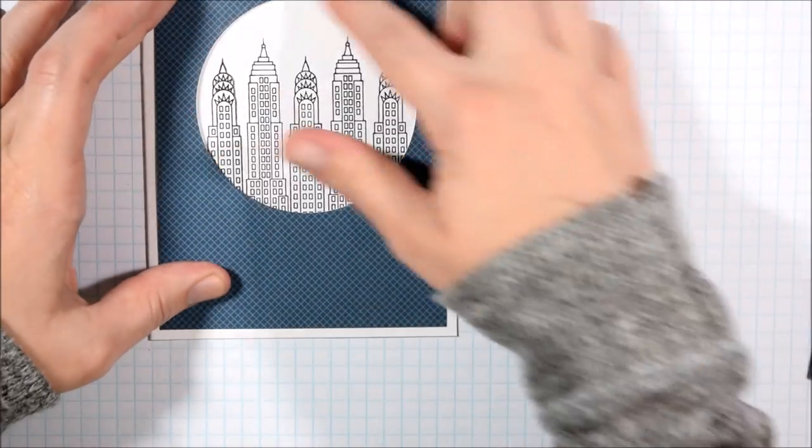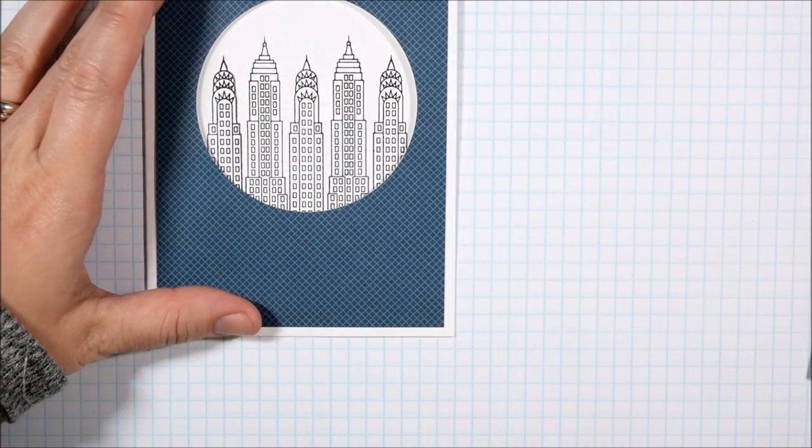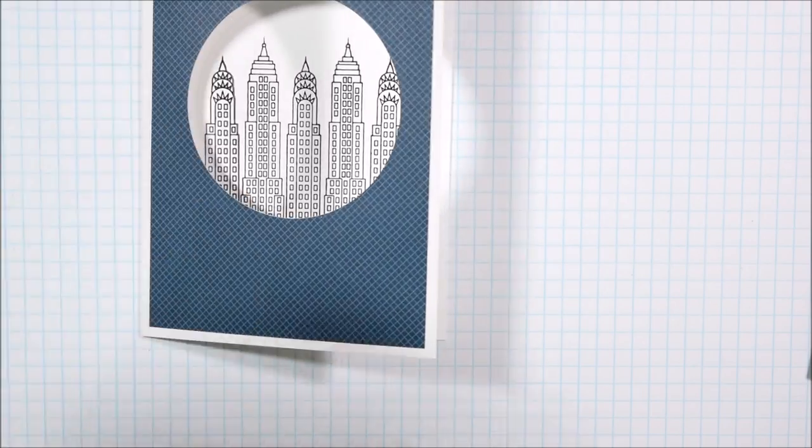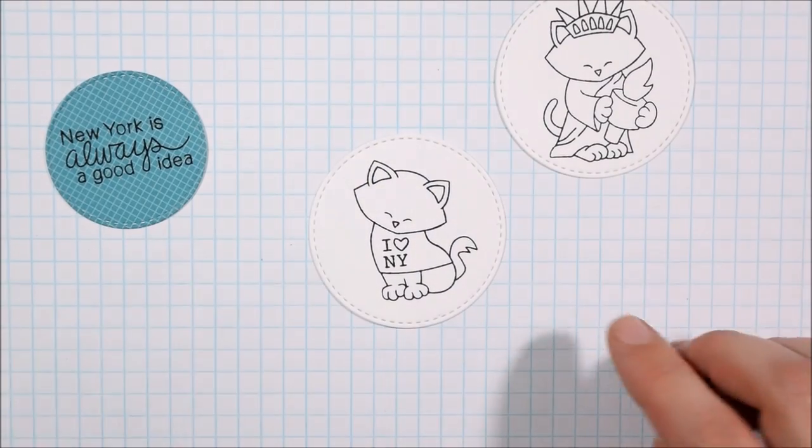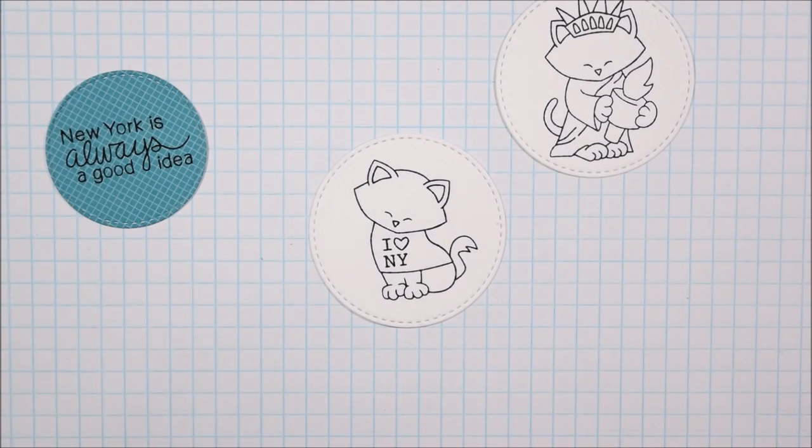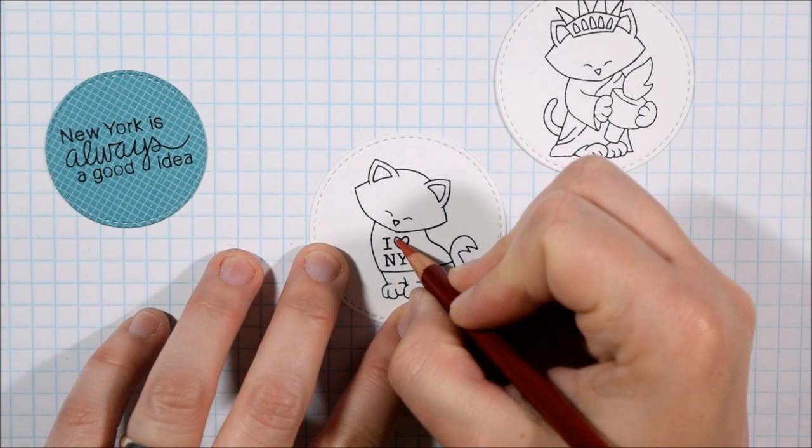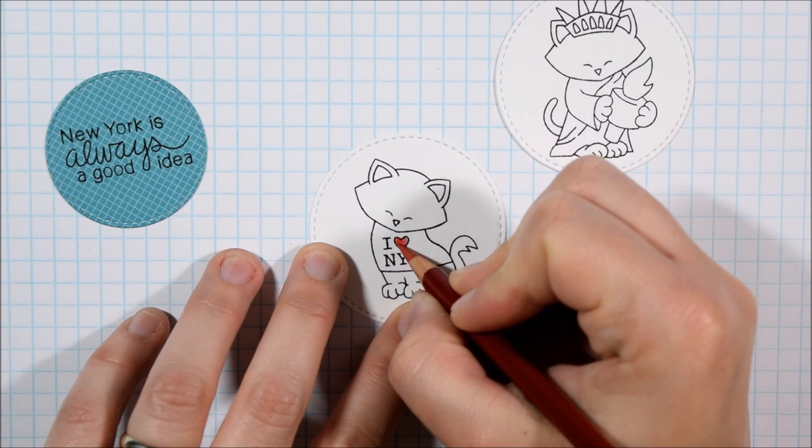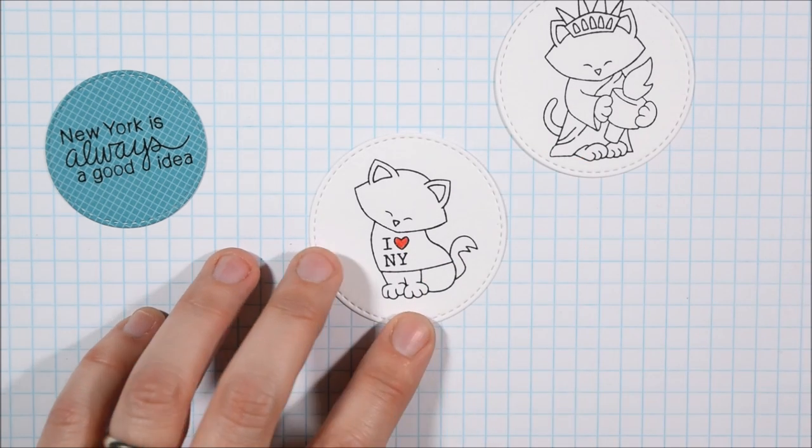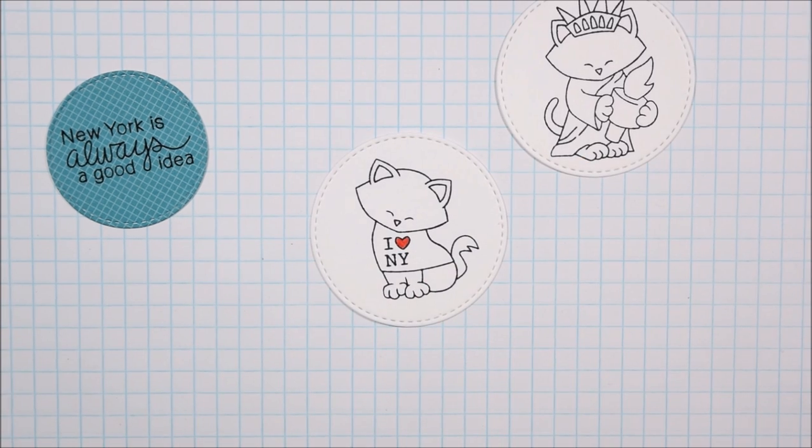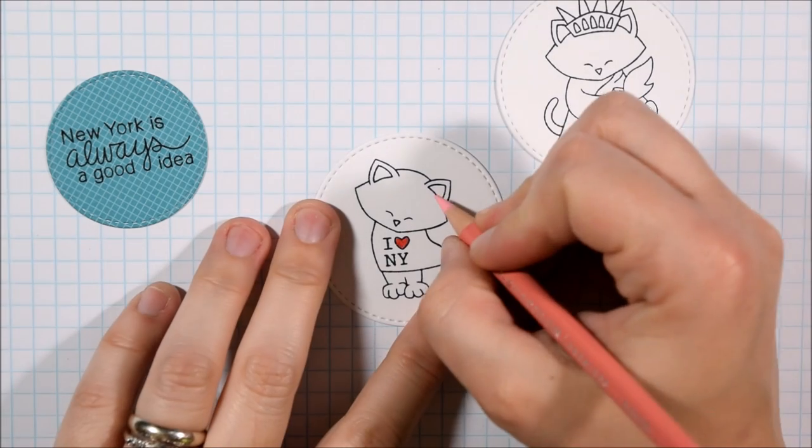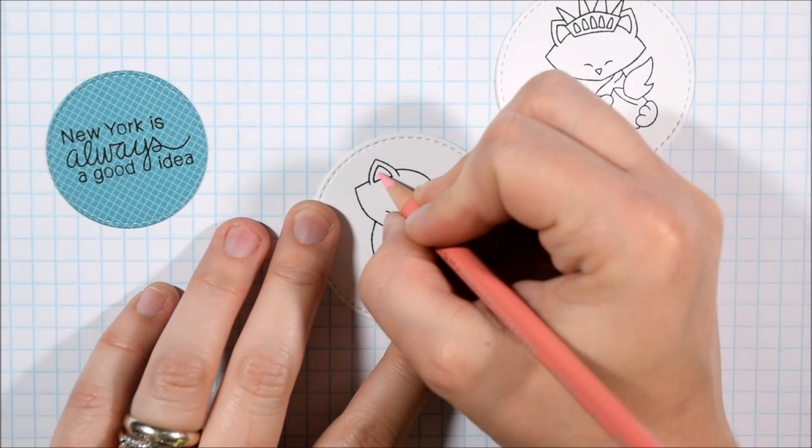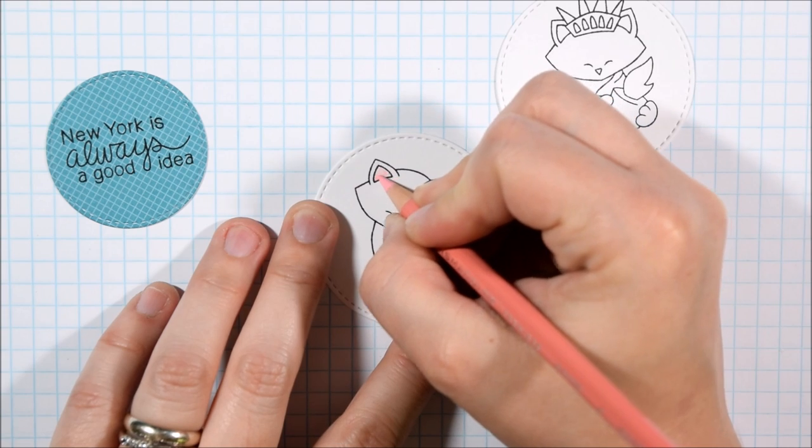I'm using VersaFine ink so that I get nice impressions the first time. I find that to be the best ink for great first-time impressions, no misty needed, but it doesn't work as well with all coloring mediums. I also cut another small stitched circle out of coordinating pattern paper to stamp the sentiment. New York is always a good idea. And now I'm going to show you just a brief bit of coloring on Newton.